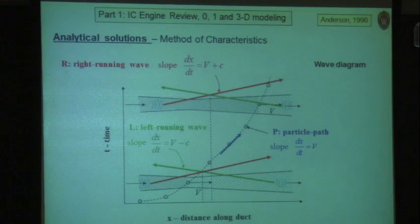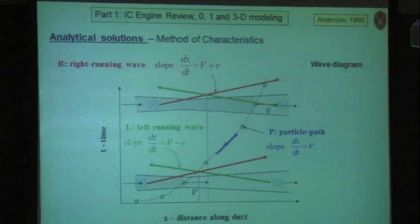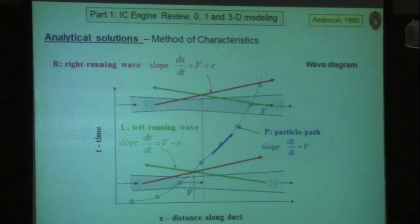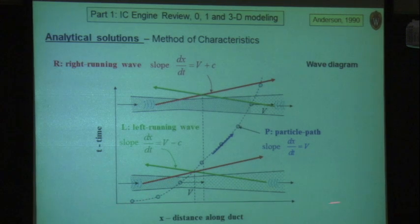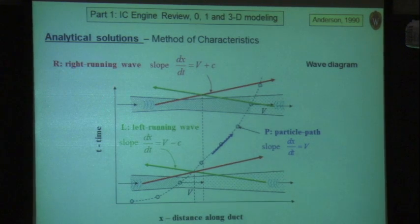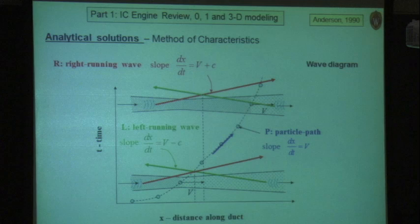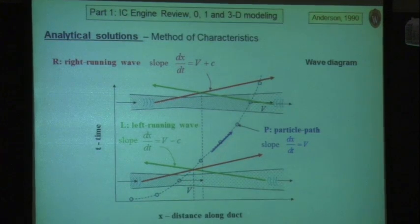The speed of sound is an important parameter, and there is a solution technique called the method of characteristics. It helps you understand one-dimensional — and in fact 3D — fluid mechanics. If you look at a plot of distance along a duct versus time, the grid points in a numerical simulation are shown, and a fluid particle moving at velocity v is located at a certain position at one time and has moved to another location at a later time. The slope of that line is the particle velocity: dx/dt.